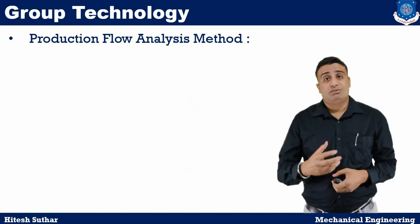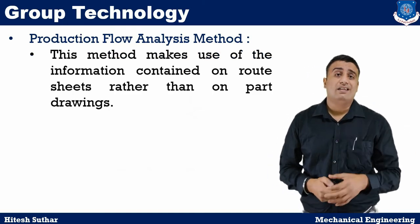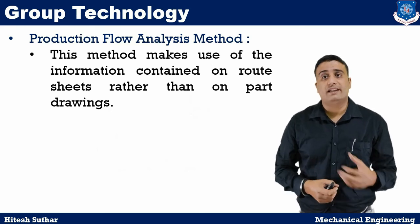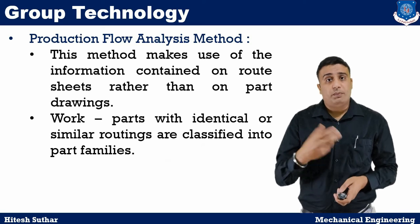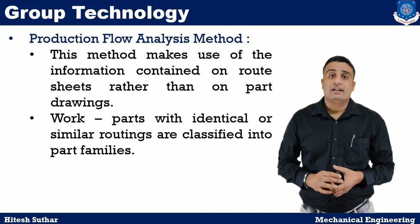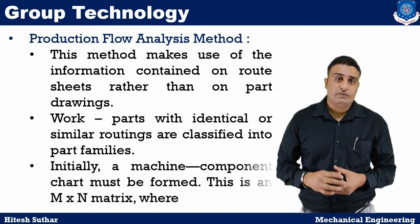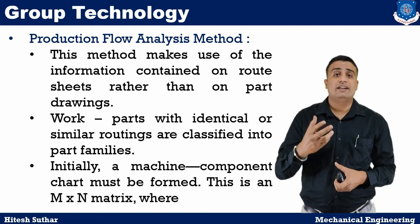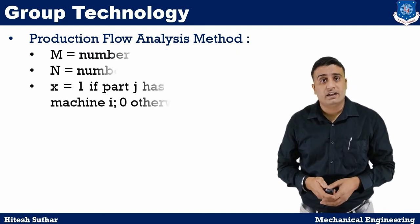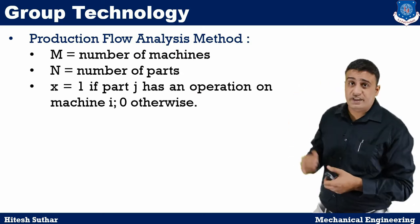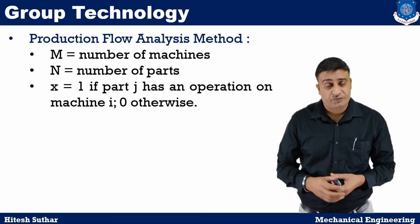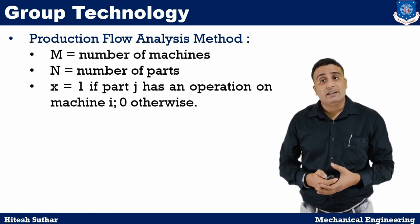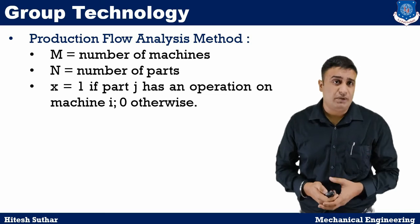Moving on to the next method, that is the production flow analysis method. This method makes use of the information contained on the route sheet rather than a part drawing. Work parts with identical or similar routing are classified into part families. Initially, a machine and component chart must be formed. This is an m by n matrix where m is the number of machines and n is the number of parts, where x is equal to 1 if part j has an operation on machine i, and 0 otherwise.